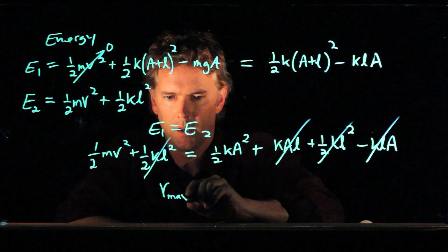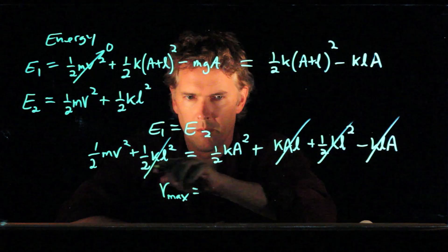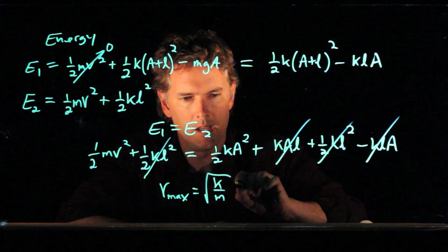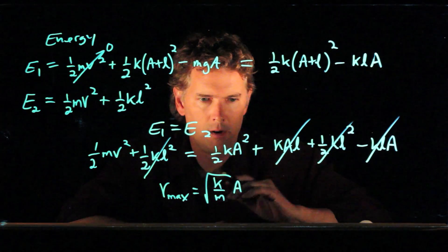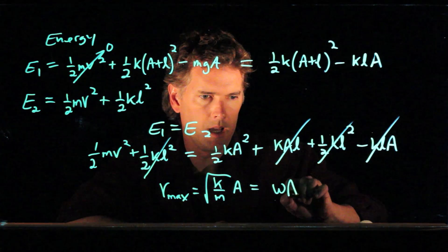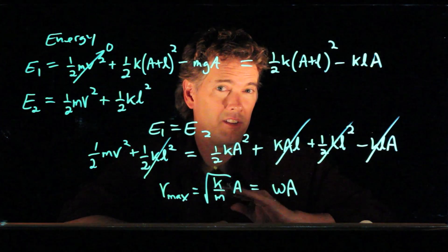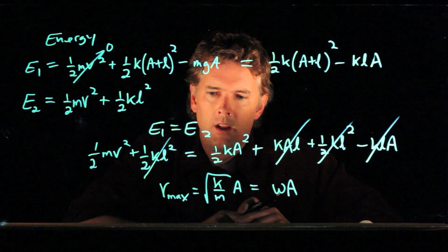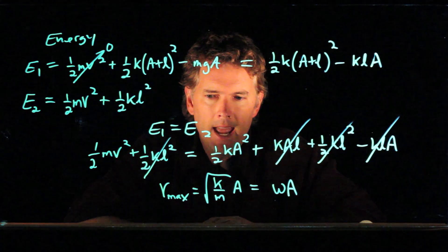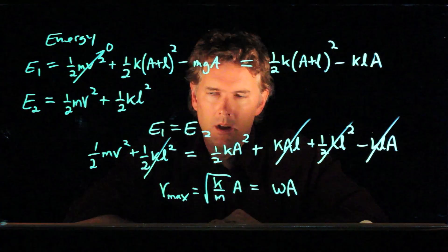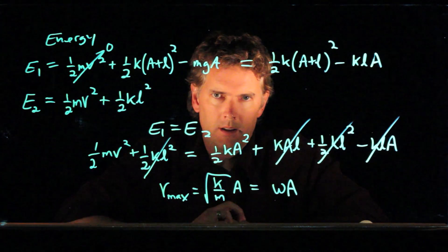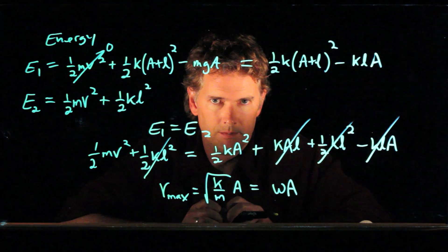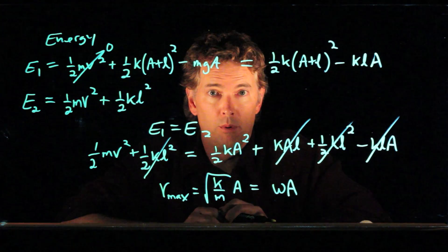And in fact, V is equal to what? Well, we multiply by 2, we divide by M, we get V max equals square root of K over M times A, which is omega times A, which is exactly the same as the horizontal case. So a vertical spring behaves exactly the same as a horizontal spring as long as it's all relative to a new equilibrium position. And that's the whole point of this exercise.